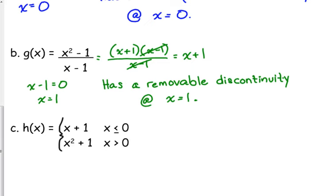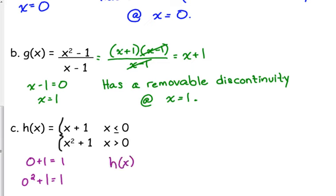For piecewise functions, the red flag is: do they meet at the changing point? In this case, at 0 — do the two sides of the piecewise function meet? Meaning, if I plug 0 into both pieces, do I get the same answer? Plugging into the first piece: 0 plus 1 is 1. Plugging into the second piece: 0 squared plus 1 is 1. They have the same value. From there, we analyze the individual functions: x plus 1 and x squared plus 1 are both polynomials. Polynomials are continuous everywhere, so H of x is continuous everywhere.